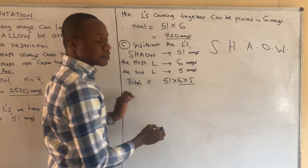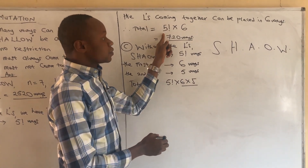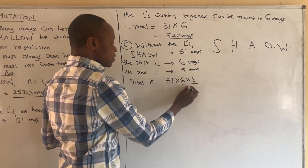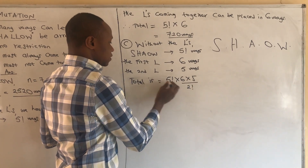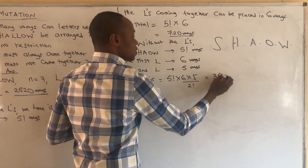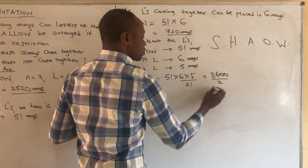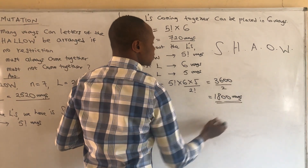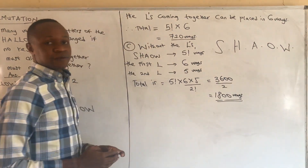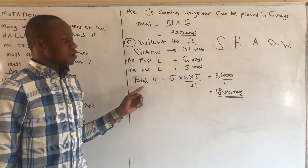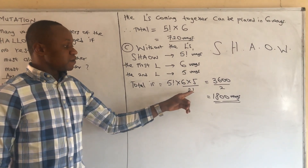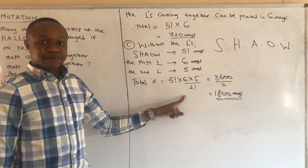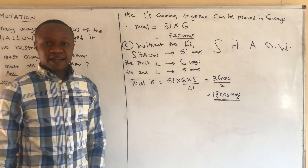The two L's, though indistinguishable, do not stand together, so they don't stand as a unit. We divide by two because they are repeated. What we have is 3600 over two, giving us 1800 ways of arranging the letters of the word 'shallow' if the L's must not come together. The division by two is because the L's are repeated and do not stand as one.